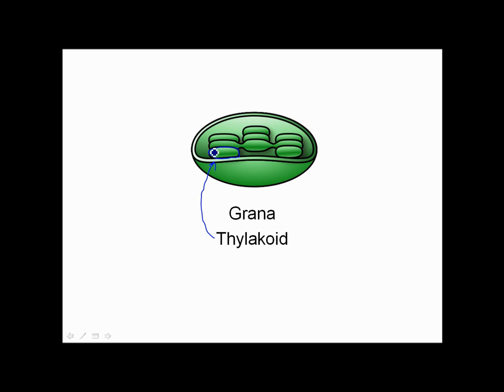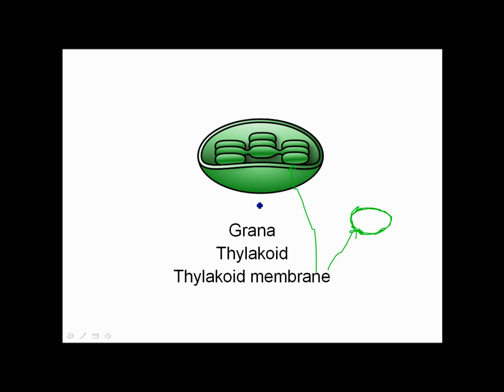And each grana is made up of multiple little bags or sacs called thylakoids. Now thylakoid comes from the Greek word which means a bag or a sac, so there's no surprise there. And now these thylakoids are surrounded by a thylakoid membrane.